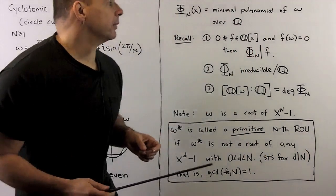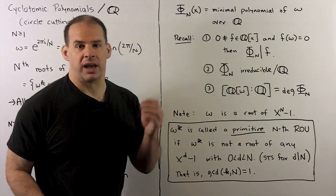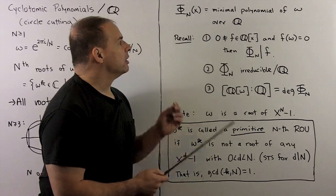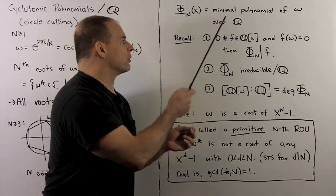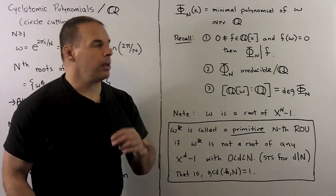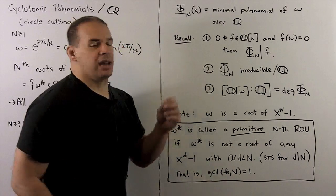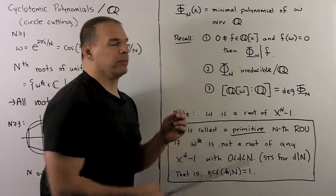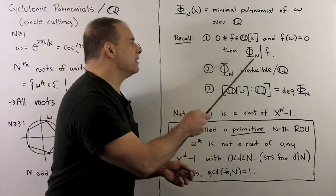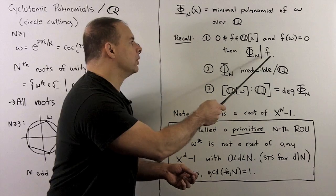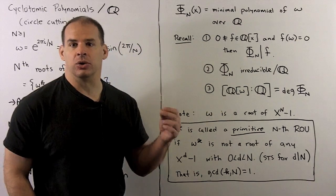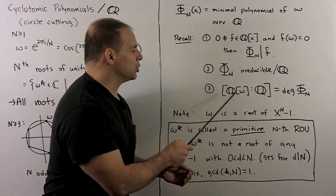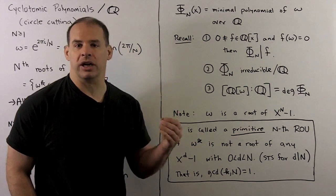Getting back to cyclotomic polynomials — definition: the nth cyclotomic polynomial, denoted φₙ, is the minimal polynomial of omega over the rationals. Recall what minimal means: if I have a non-zero polynomial f with rational coefficients and omega is a root of f, then φₙ must divide f. With the minimal property, φₙ is irreducible over the rationals. If we're interested in field extensions, the degree of Q(omega) over Q equals the degree of φₙ.